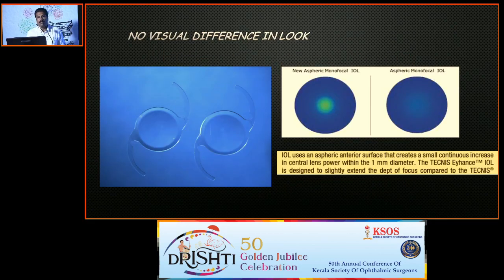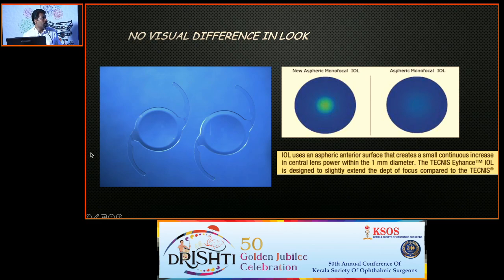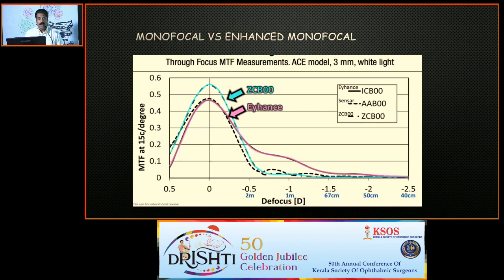About enhanced monofocal — if you visually see, there is no difference between the two lenses. One is an enhanced monofocal and the other is just a monofocal. They look very similar. How the enhanced monofocal works is: it is essentially a monofocal lens, except the central 1mm — the anterior asphericity of the central 1mm — is made with higher order optics. There is a gradual increment of power given only in that center. That one mm area can give up to +0.5 to +0.75 extra power. That is what is called an enhanced monofocal.